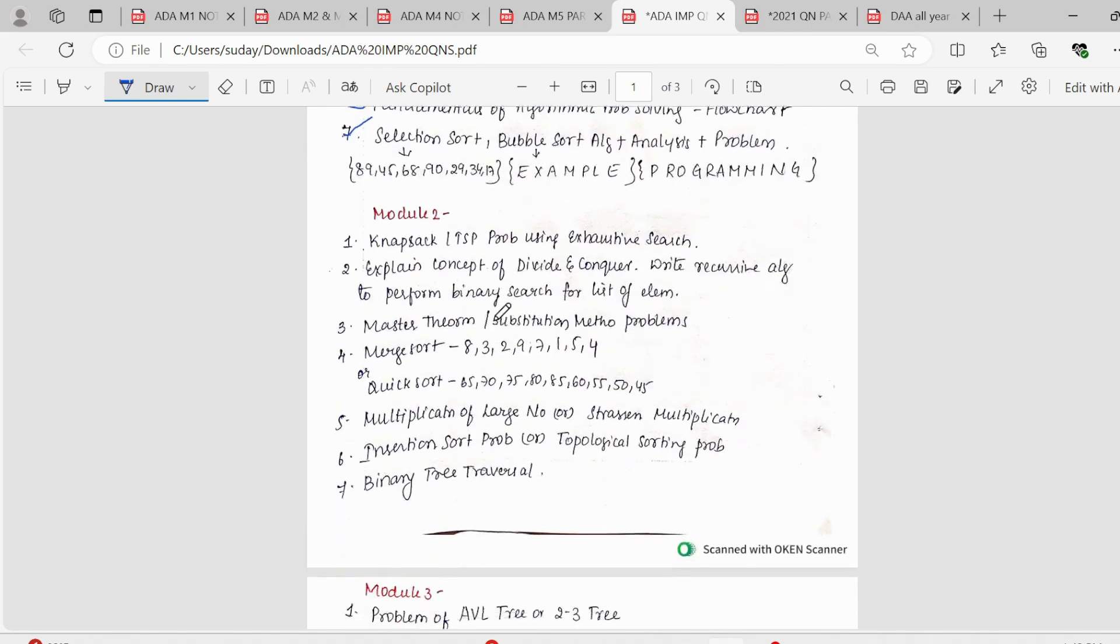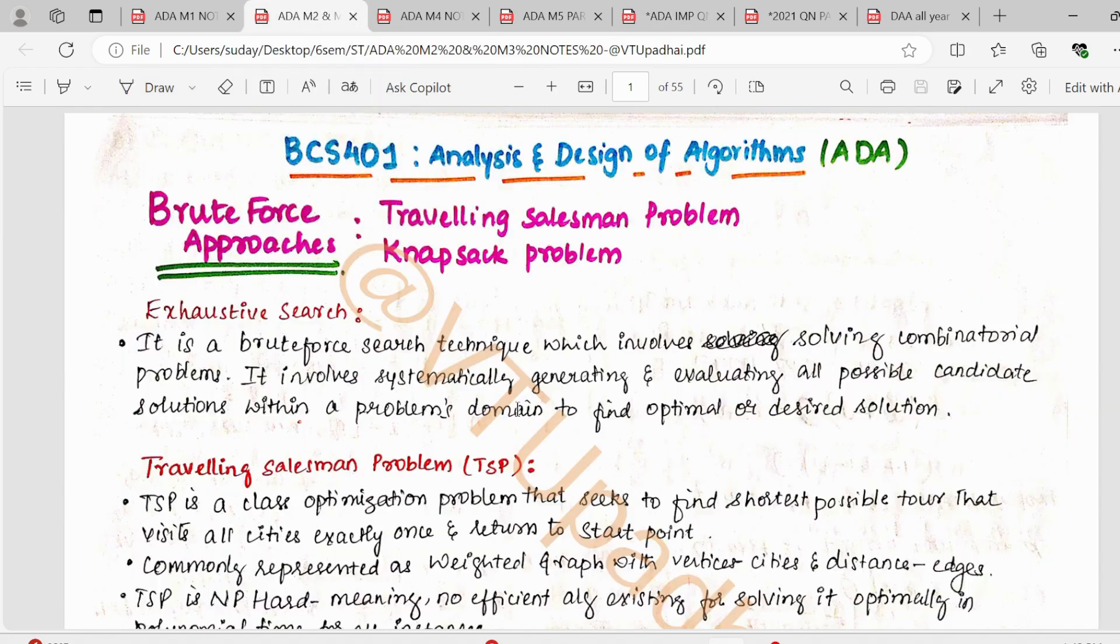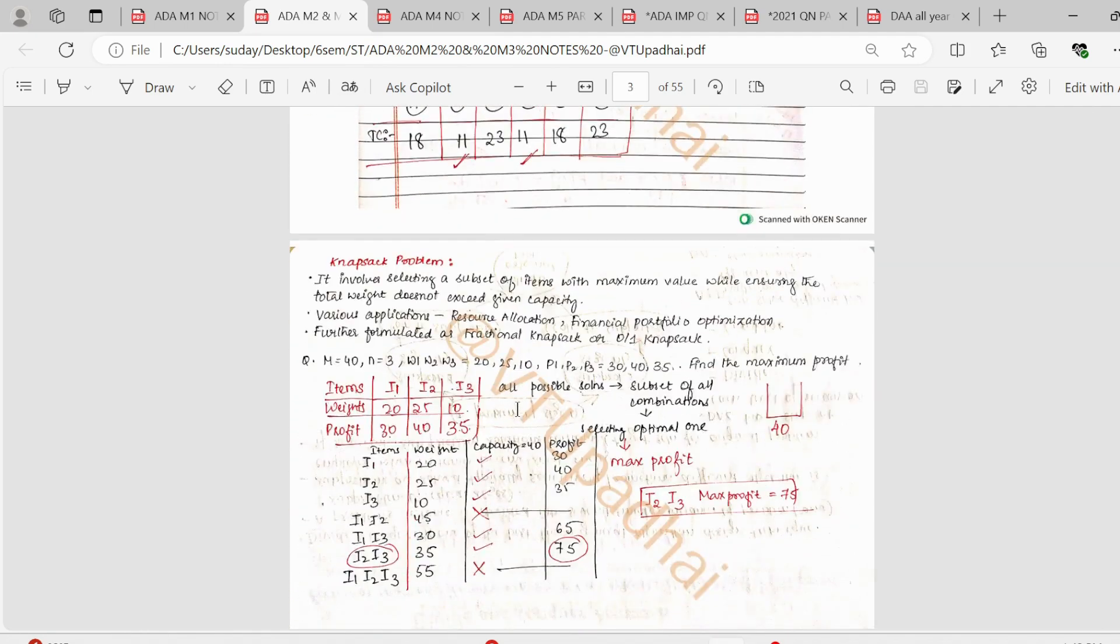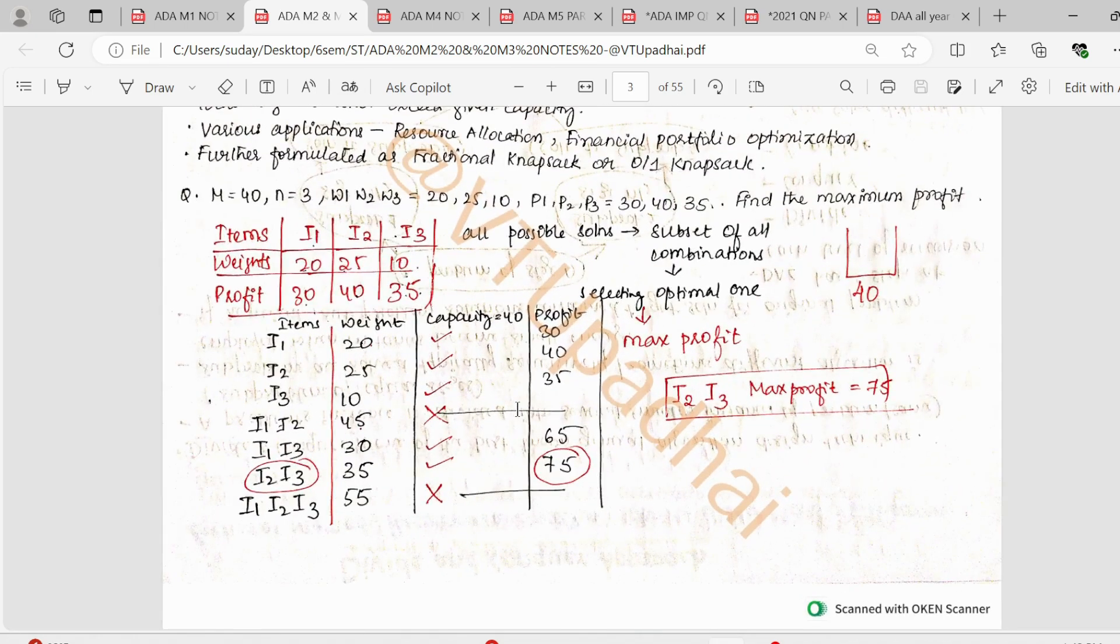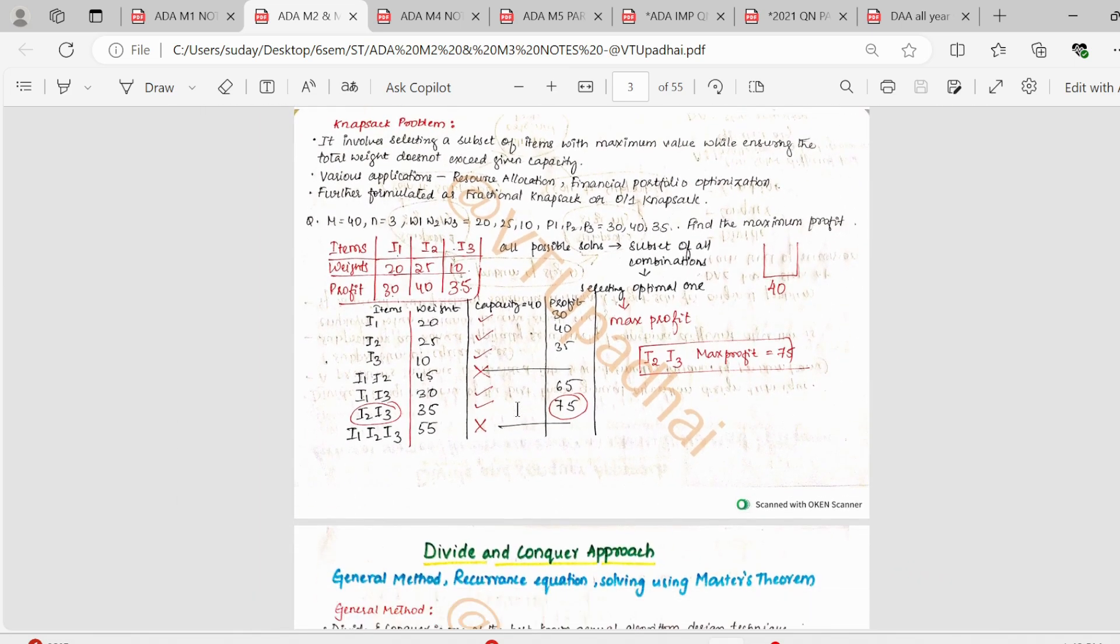Moving on to the second module, we have knapsack or traveling salesman problem using exhaustive search. Again, knapsack and traveling salesman problem, this is a pretty easy topic. How will you perform the traveling salesman? And in knapsack problem, how will you do it? You'll consider all the items, all the combinations, and then derive one particular item or a set of items which will have maximum profit.